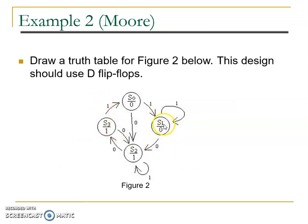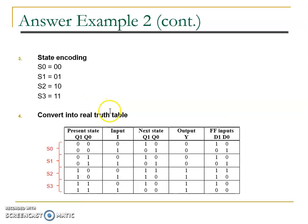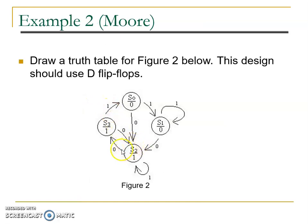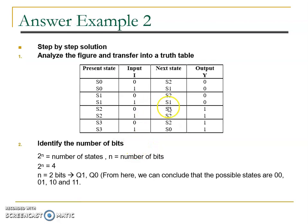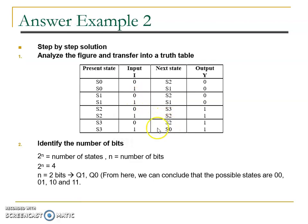For S1, input 0 the next state will be S2, and input 1 the next state will be S1. For S2, input 0 the next state will be S3, and input 1 the next state will be S2. For S3, input 0 the next state will be S2, and input 1 the next state will be S0.